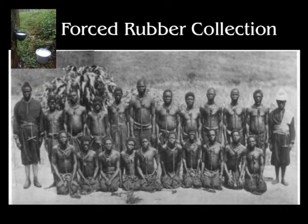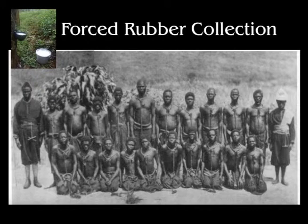They were supposed to do this to show they weren't stockpiling bullets to lead a rebellion against the Belgian agents. But some members of the Force Publique used their ammunition for other reasons — hunting, or stockpiling. This led to a terrorizing campaign where they would cut the hands off of anybody they encountered to account for their use of bullets. Missionaries and journalists in the late 1800s and early 1900s witnessed evidence of women and children being mutilated in this way.